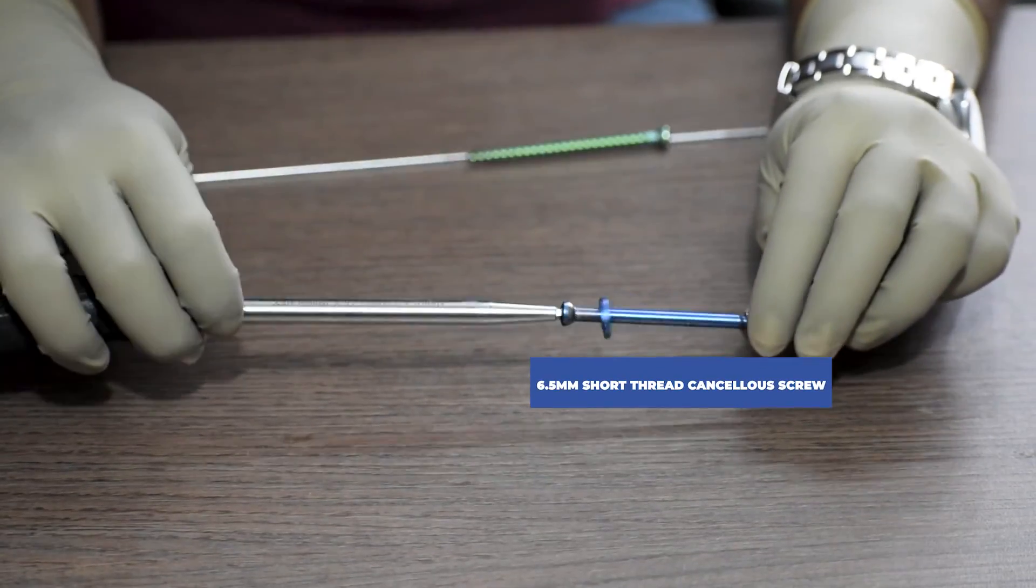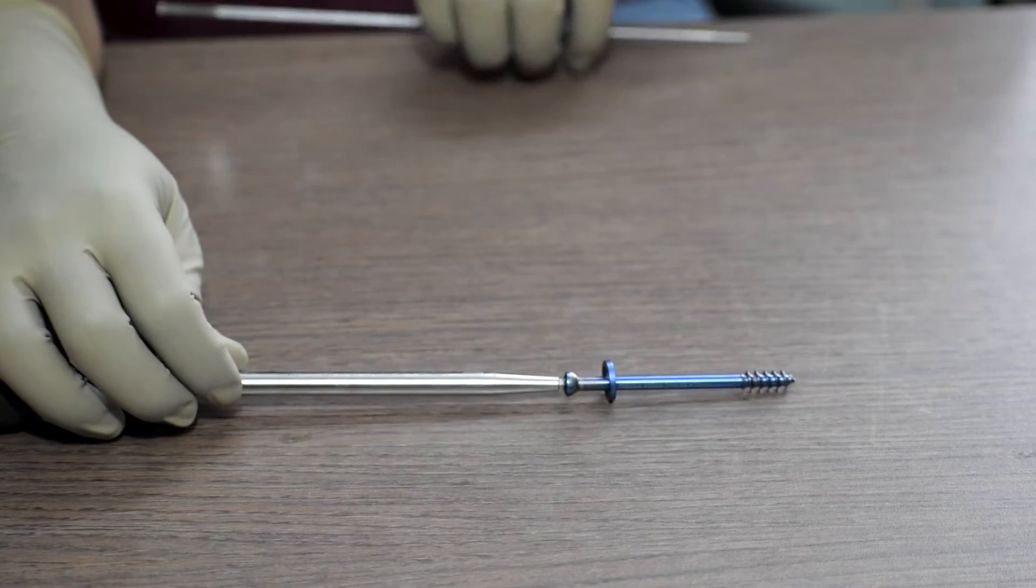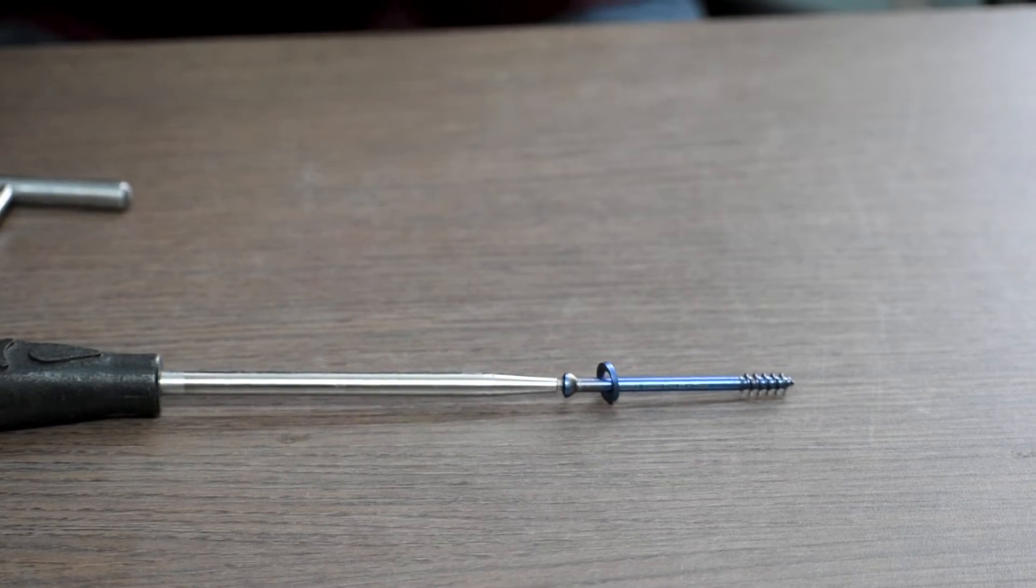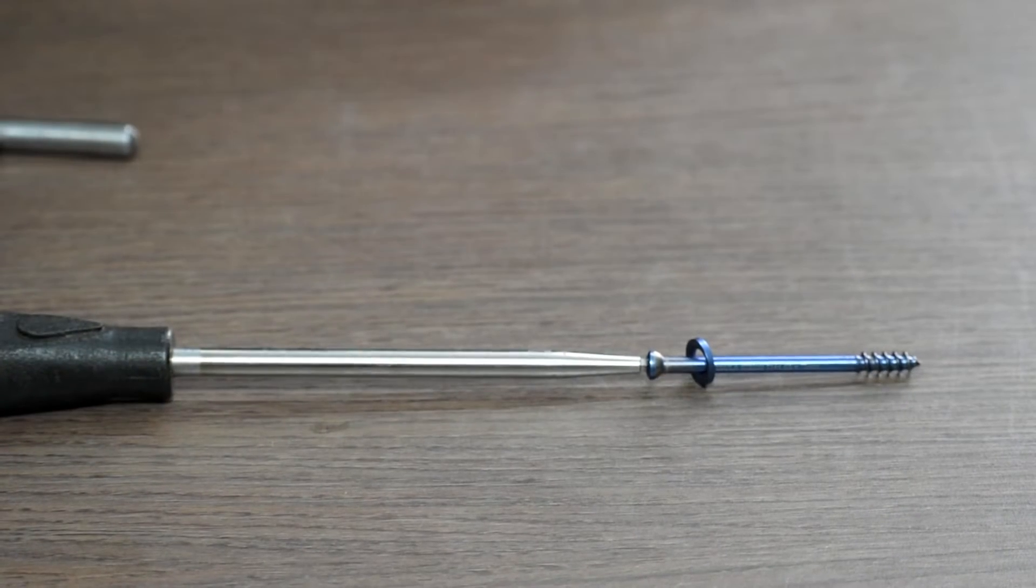And then, with the help of a 4.5mm solid screwdriver, we will fix the screw in the desired location. The solid screwdriver is used to do the final tightening.